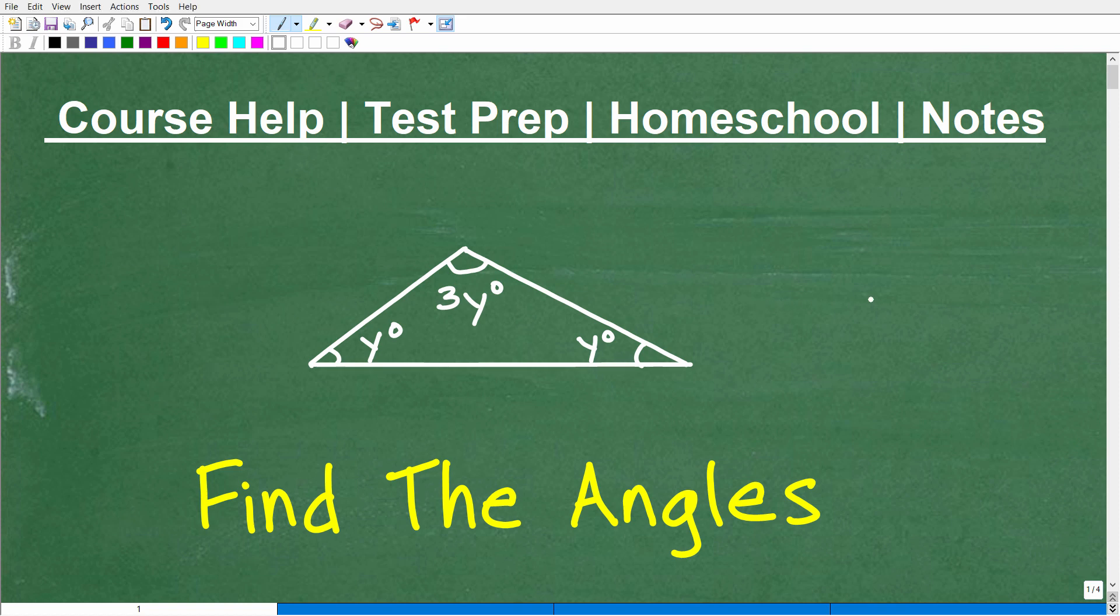Okay, so what do we have here? Well, we have a triangle, and we're given that the angles of this triangle is y degrees here, y degrees there, and 3y degrees right here. So the question is, we want to find the actual angles of this particular triangle, and this is actually enough information for you to do that.